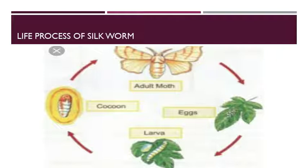The silk worm produces a continuous filament fiber consisting of a protein called fibroin and a gum called sericin. Fibroin forms the silk filament and sericin cements the two filaments together. The sericin is removed by placing the cocoon in hot water.